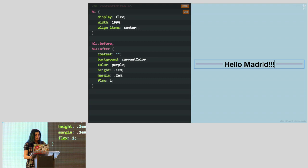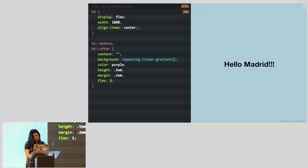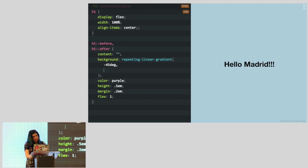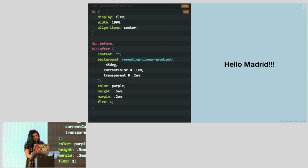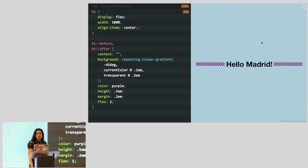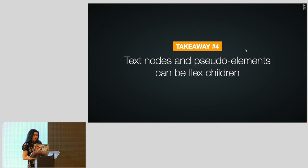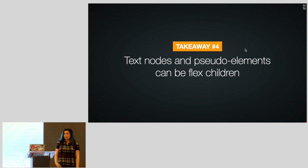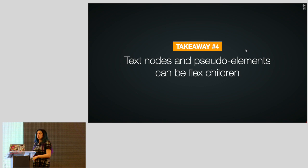Notice that when the text wraps to two lines, the decoration just disappears — which is basically what you'd expect, and you don't have to do anything special to avoid it. It just works. You don't have to restrict yourself to lines — for example, you could use repeating-linear-gradient with an angle and color stops to get diagonal stripes instead. Takeaway: text nodes and pseudo-elements can be flex children. The flex children in our example were just the text inside the heading and the two pseudo-elements.